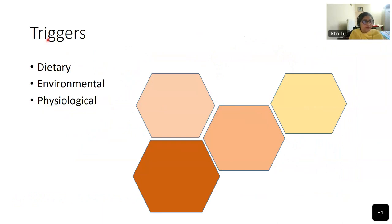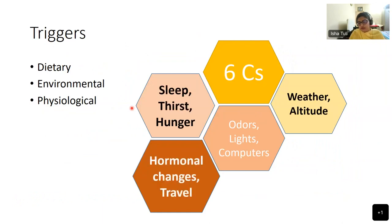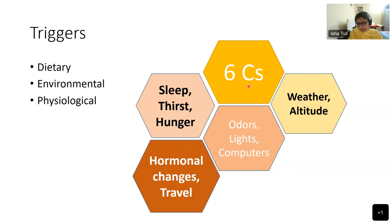Triggers in migraine are dietary, environmental, and physiological. The dietary triggers are the six C's to be discussed shortly. Environmental triggers include weather, altitude, odors, light, and backlight from computers. Physiological triggers include using too much cell phone, lack of sleep, thirst, hunger, and various hormonal changes. Travel is a particularly severe trigger because it involves lack of sleep, change in weather and altitude, probable dietary change, and various stresses such as tickets, packing, going to the airport — particularly if you are responsible for an entire travelling family.